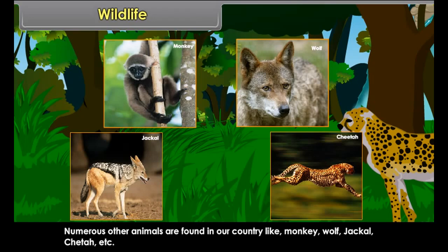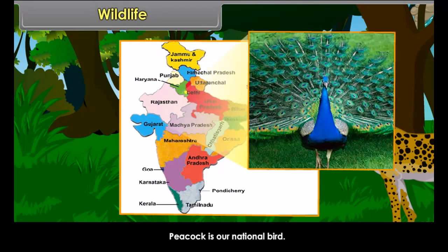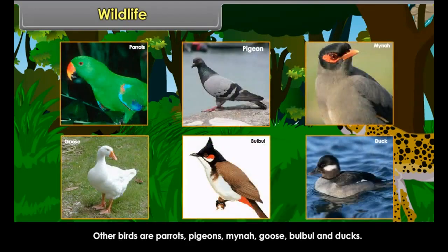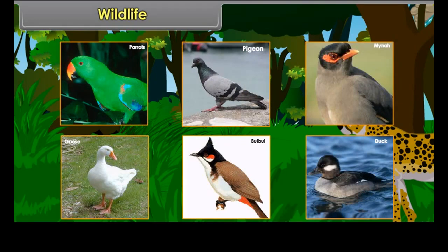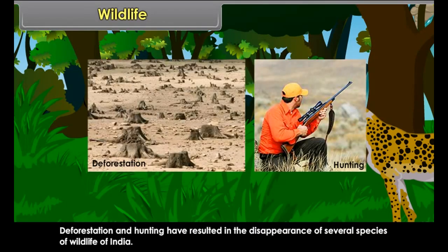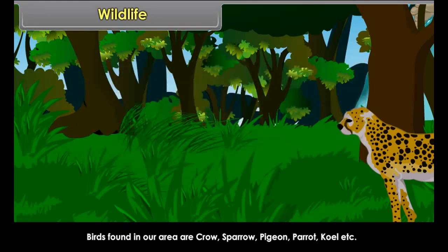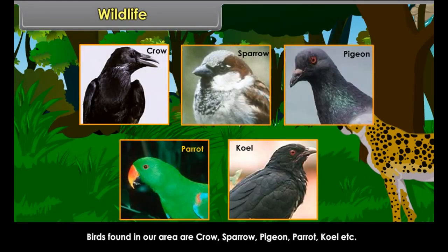Elephants and one-horned rhinoceros live in the forests of Assam, Kerala, and Karnataka. Camels and wild asses are found in the Thar Desert and the Rann of Kutch. Wild goats, snow leopards, and bears inhabit the Himalayan region. Many other animals such as monkeys, wolves, jackals, and cheetahs are also found in our country. Peacock is our national bird.